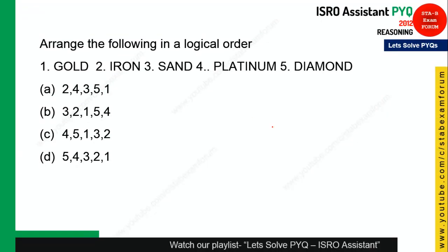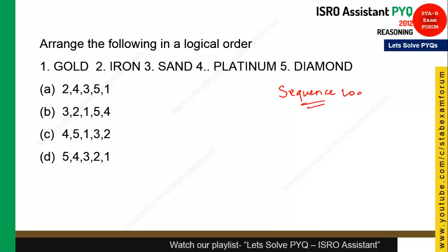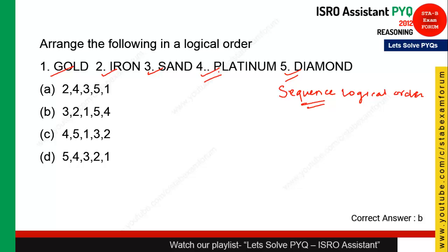Arrange the following in logical order — this is a sequence logical ordering question. The items are: gold, iron, sand, platinum, diamond. The basis for sorting is their cost. Sand is the cheapest, then iron, then gold, then diamond, and platinum is the most costly of all. So option B is the right answer.